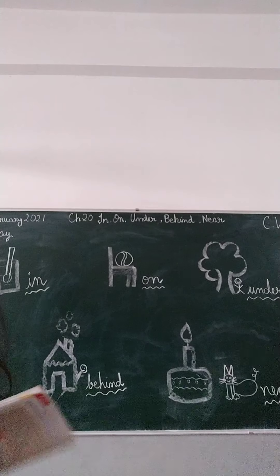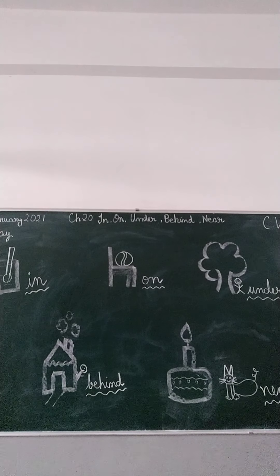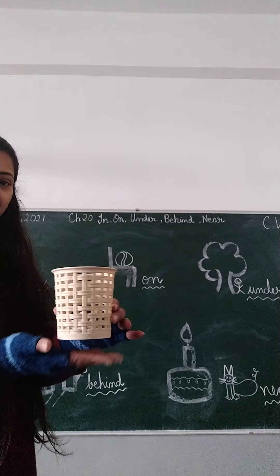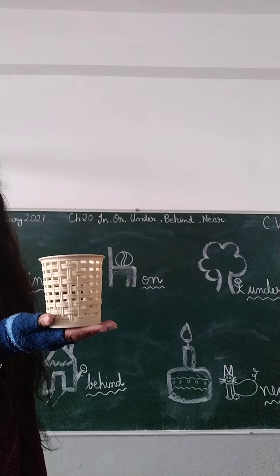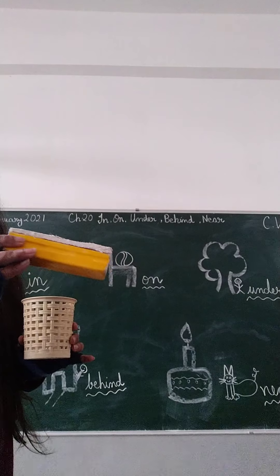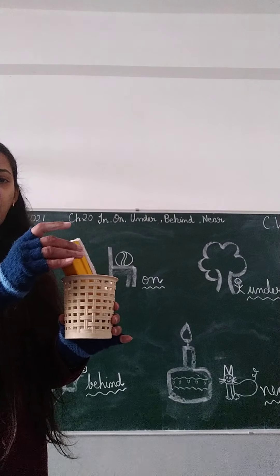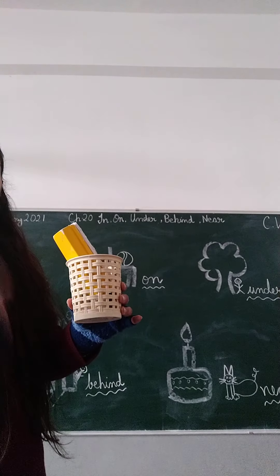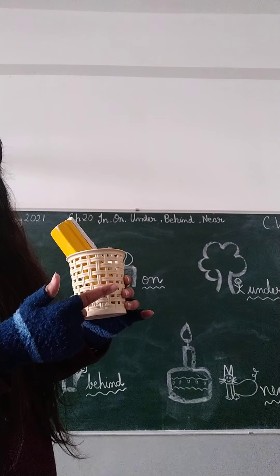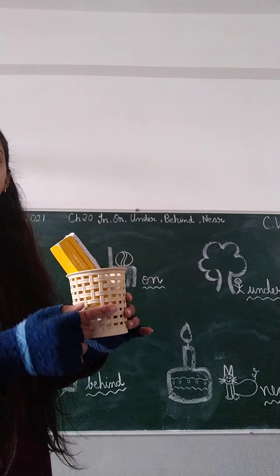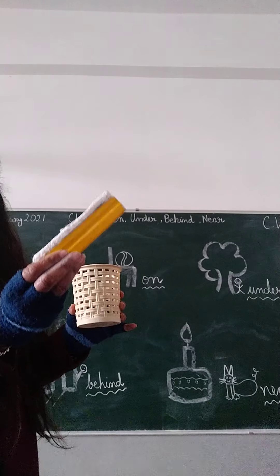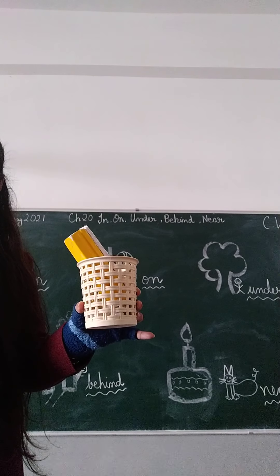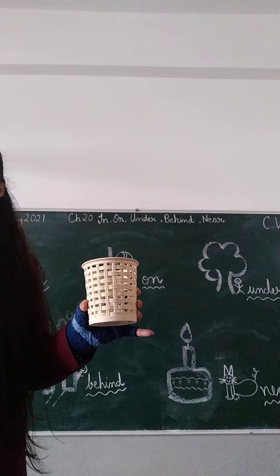As you can see, there is a picture, and I am also going to use my chalk box. With the help of this, I am going to introduce you to in, on, under, behind, and near. I am using my duster. If I say the duster is in the box, that means I have kept my duster inside this box. My duster is in the box — that is 'in'.